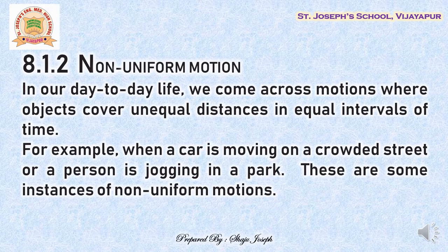When moving in a crowded place, you will have to increase your walking speed and sometimes slow down a little bit, so you will not be covering the same distances in given intervals of time. For example, a person moving in a crowded street may cover very little distance in the first few seconds, then find an empty spot and cover a larger distance in the same time. Such movements are called non-uniform motion.